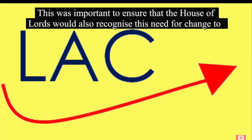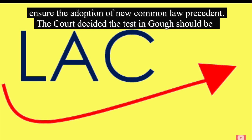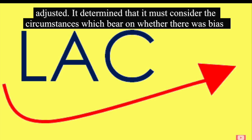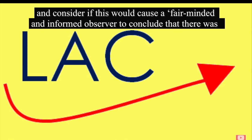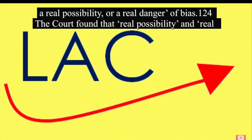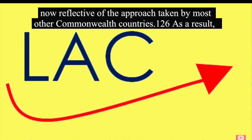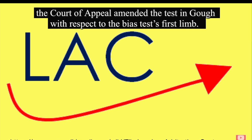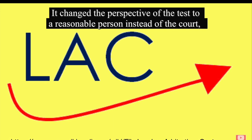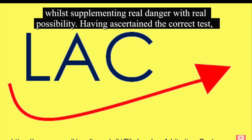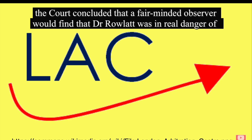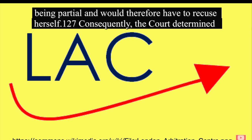This questioned the foundational principle that justice must not only be done, but must also manifestly be seen to be done. This is significant as the administration of justice rests on public confidence in the system. It also highlights the willingness of courts to look at fellow Commonwealth jurisdictions to inform their decisions. The court also questioned the continued jurisprudence of Sussex Justices due to its allowance of fanciful suspicions of bias permitting a matter being quashed. The court demonstrated the overarching flaws of each test to highlight why a third test should be introduced. The court decided the test in Gough should be adjusted. It determined that it must consider the circumstances which bear on whether there was bias, and consider if this would cause a fair-minded and informed observer to conclude that there was a real possibility or a real danger of bias.